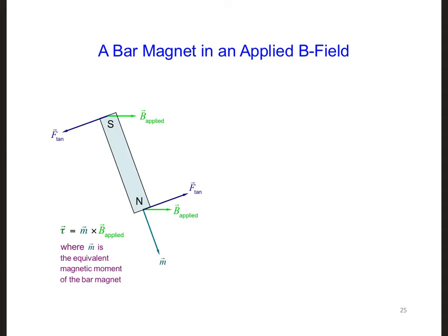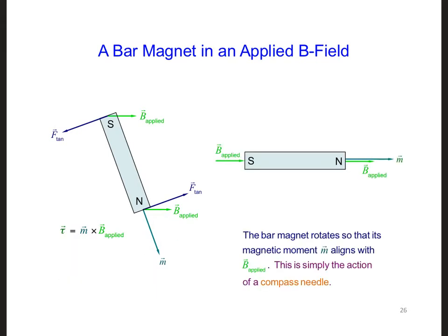For example, a bar magnet has a B field just like a wire loop. Notice the magnetic moment here, just like our current loop had. As a result, the bar magnet will also feel a torque so that its magnetic moment, M, and its B field will want to be aligned with B applied, just as for the current loop. And this is exactly how a compass needle works.